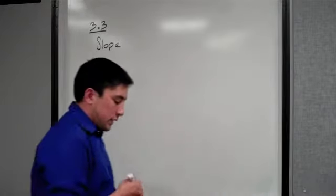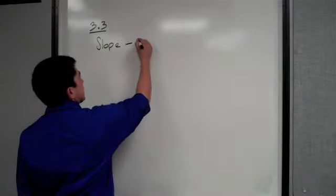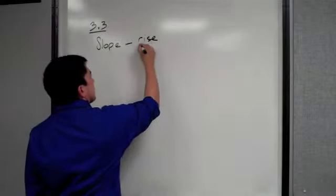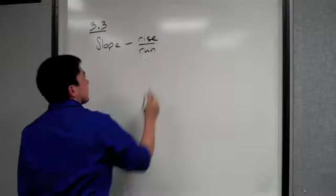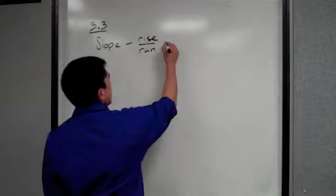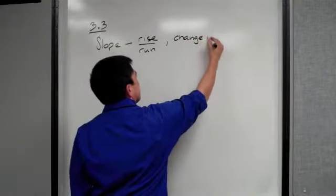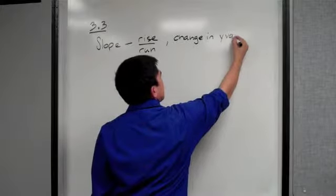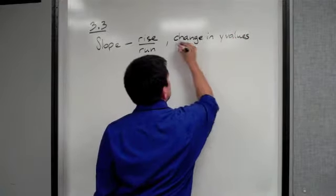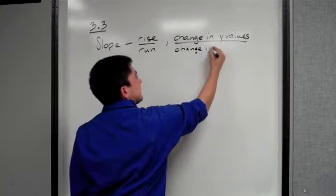What is slope? Slope is rise over run - that's a little way of remembering it. The technical way of saying that is the change in y values over the change in x values.